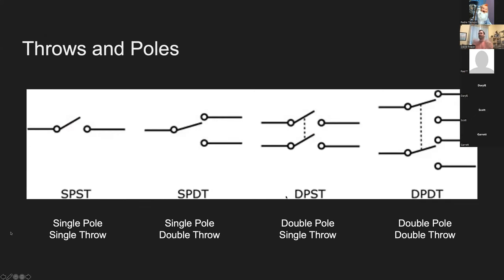There are other types of switches as well: single pole single throw, single pole double throw, double pole single throw, and double pole double throw — all with different purposes. If you've ever heard of a limit switch, or even these buttons, they often have a single pole double throw switch in them. That means it has three contacts.